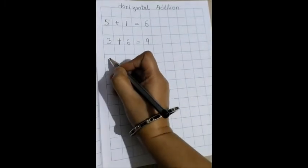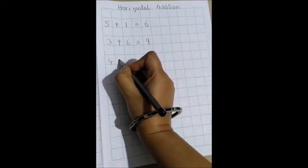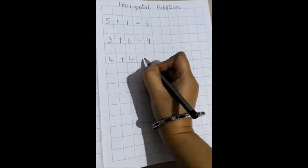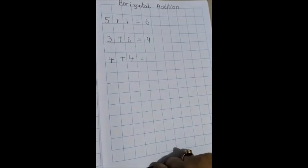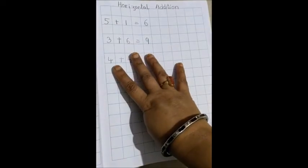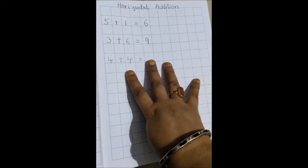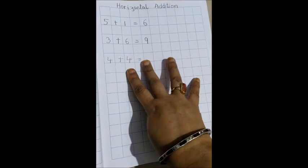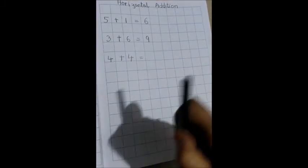Now the next one is 4 plus 4 equals to. Both the numbers are same, so you can keep any one 4 in your mind and the other 4 we put it out. 4 fingers out for the other 4. 4 in your mind and 4 fingers out. After 4, 5, 6, 7 and 8. So what will we write out here? 8.